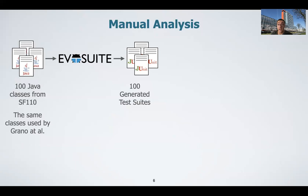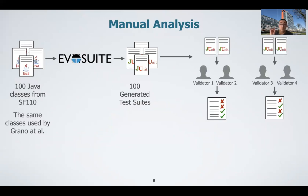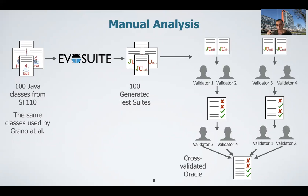For the first research question, we did not rely on any test smell detection tool but conducted our analysis through manual validation. We considered the same 100 Java classes used by Grano et al., coming from the SF110 dataset. We used EvoSuite with proper parameter tuning and configuration and obtained 100 generated test suites. We then cross-manually validated the test cases to identify test smells and categories of test smells. In particular, we divided the test suites into two groups. Two independent validators analyzed each group of test suites, obtaining two partial oracles, and we further cross-validated the final oracle between the four validators to check for and fix potential inconsistencies and disagreements. At the end, we obtained a cross-validated oracle.